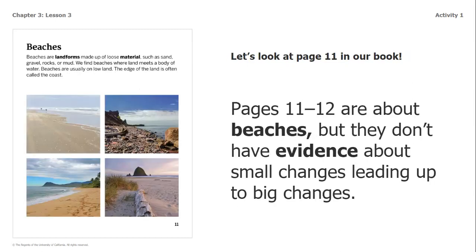We're going to be looking at page 11 in our book, focusing on beaches. Beaches are landforms made up of loose material such as sand, gravel, rocks, or mud. We find beaches where land meets a body of water. Beaches are usually on low land. The edge of the land is often called the coast. Pages 11 and 12 are about beaches, but they do not have evidence about small changes leading up to a big change, so I know I need to continue reading.